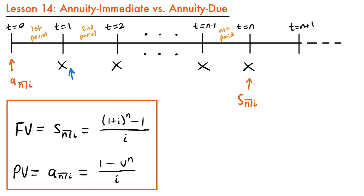The difference is that annuity immediate is evaluated one period before that first payment is made, but the annuity due is evaluated at the time that the first payment is made. The notation looks like 'a' with n and the interest rate, but we add two little dots above the a to identify it as the present value of an annuity due. For the future value of an annuity due, that's the valuation one payment period after the final payment — at t equals n plus one — and the notation uses 's' with two little dots above it.